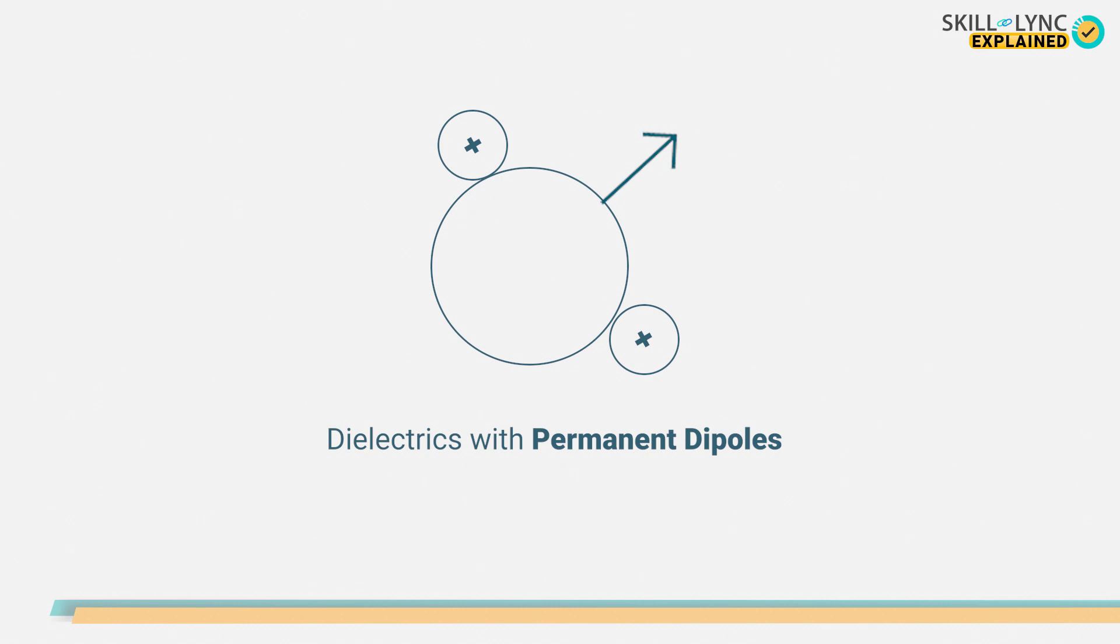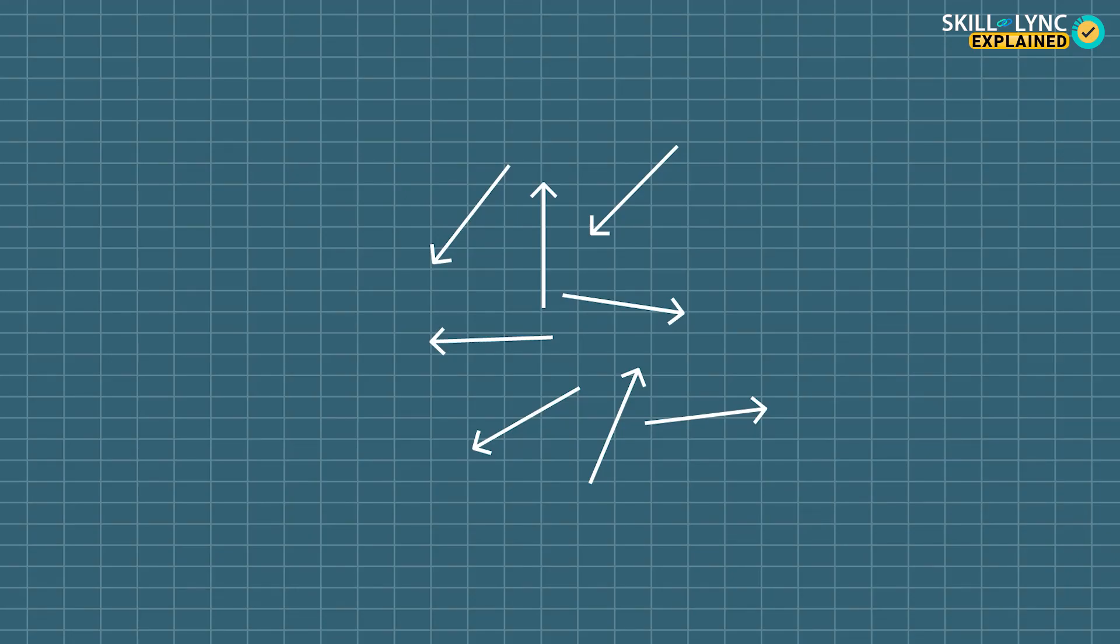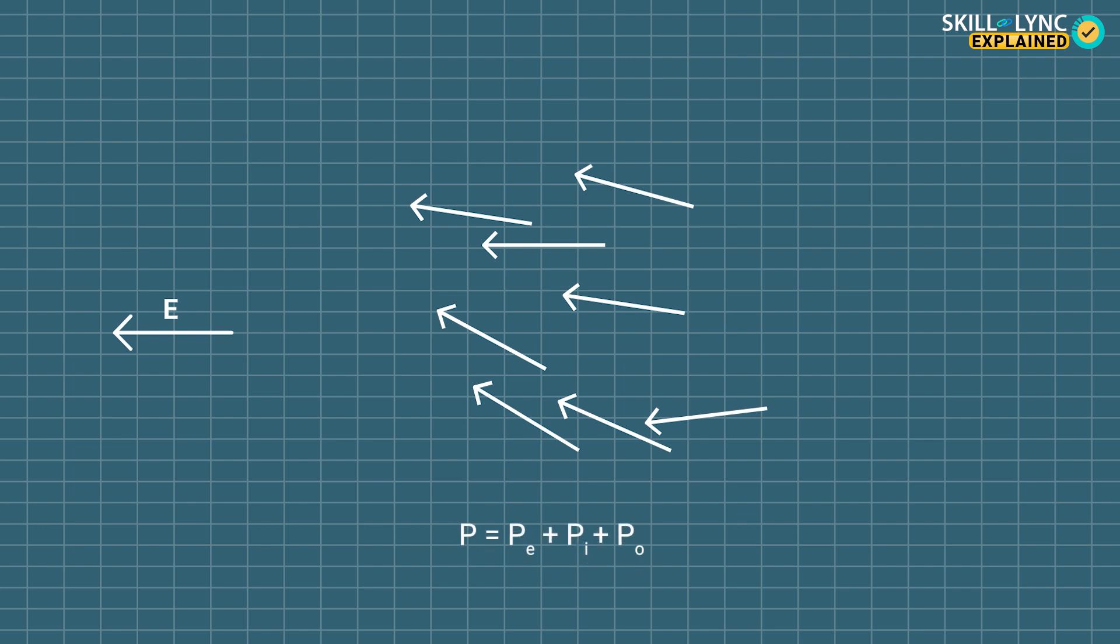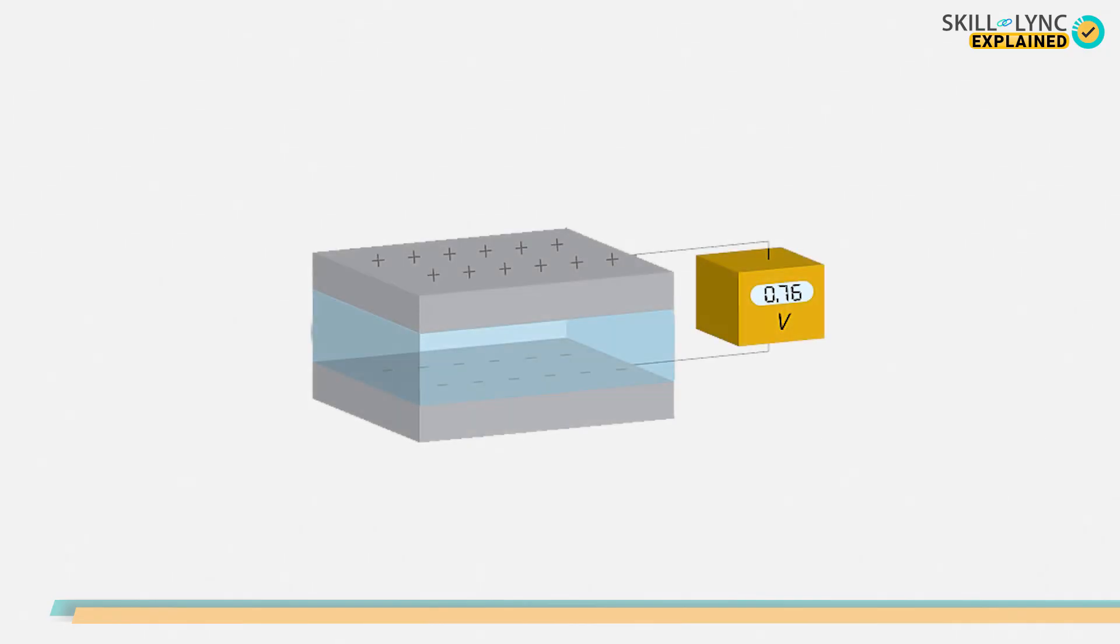This type is only found in dielectrics with permanent dipoles. Here the electric dipoles in the dielectric will rotate in the direction of the applied field. Thus the total polarization in a dielectric will be the sum of all three: that is electronic, ionic, and orientation polarization.